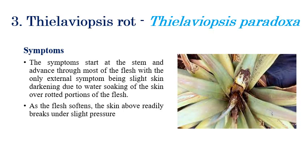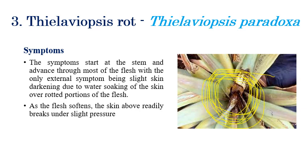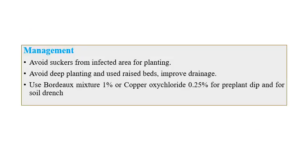The third disease is Thielaviopsis root rot, caused by Thielaviopsis paradoxa. Symptoms are mainly seen on the lower or basal stem regions. The outer skin of leaves and the middle region can become darkened, and black color masses of fungal growth can be seen. Rotting of flesh is also observed, and the outer flesh of the fruit becomes soft, reducing market value.